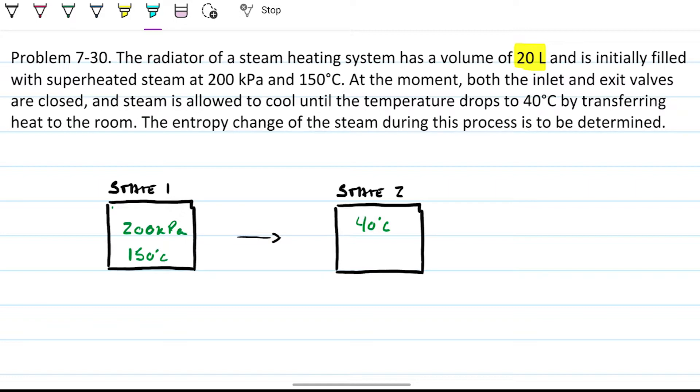It's initially filled with superheated steam, so that's straightforward. We already know where we're going to grab the properties, which table to look for. And at the moment, both the inlet and exit valves are closed. This is another important information - if the inlet and outlet valves are closed, there's no mass entering or leaving this radiator. So therefore, two pieces of information: we have a radiator, which generally doesn't change in volume, and we also have the inlet and outlet valves closed, so no mass entering or leaving.